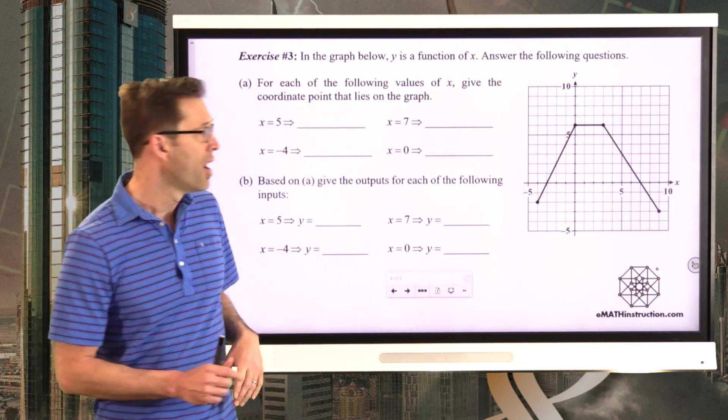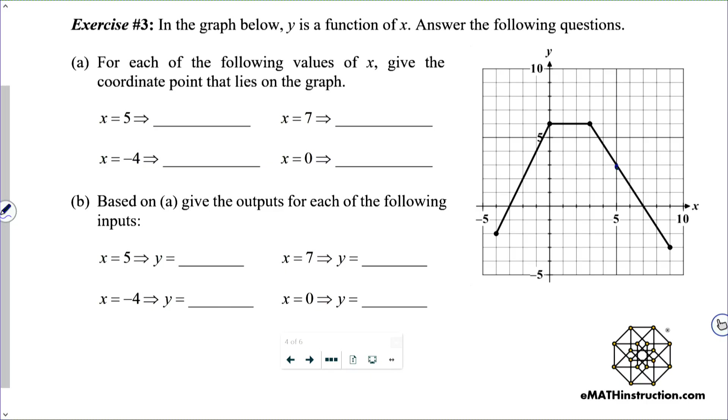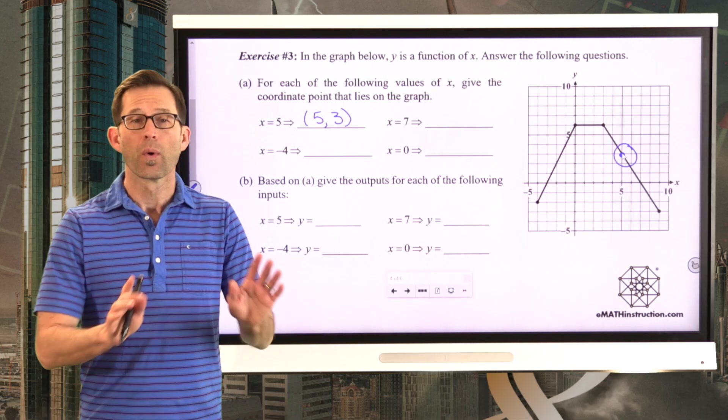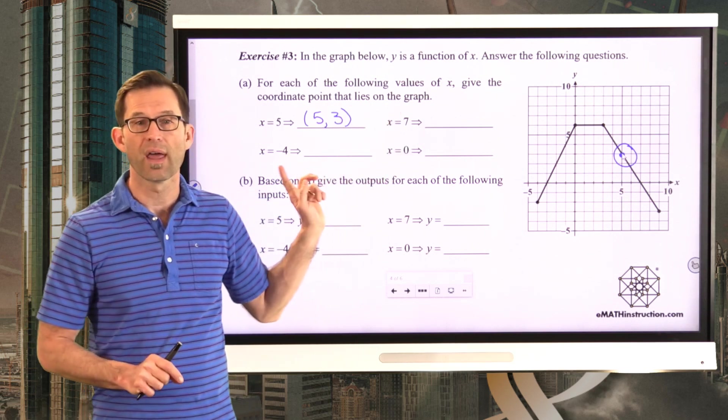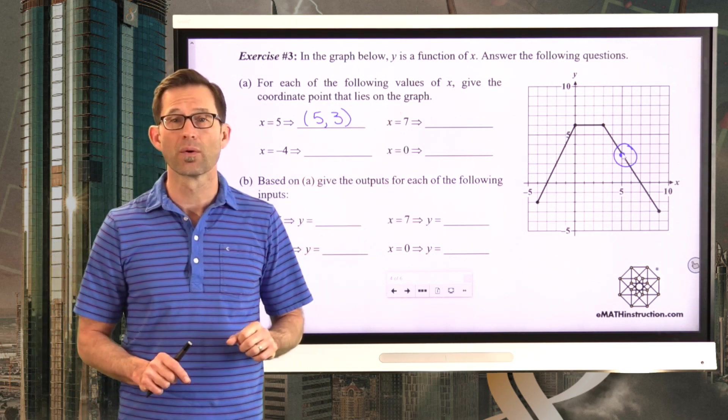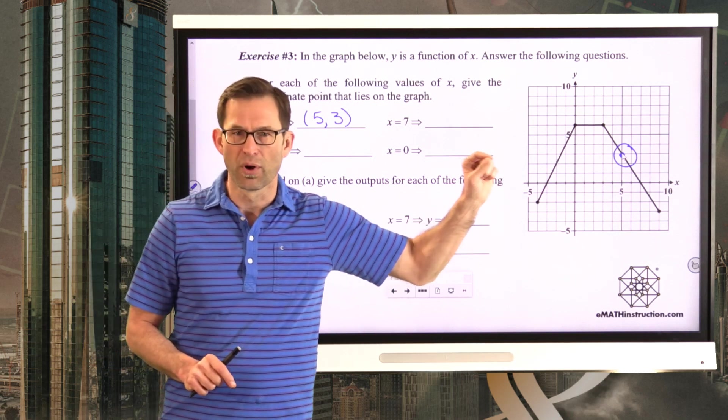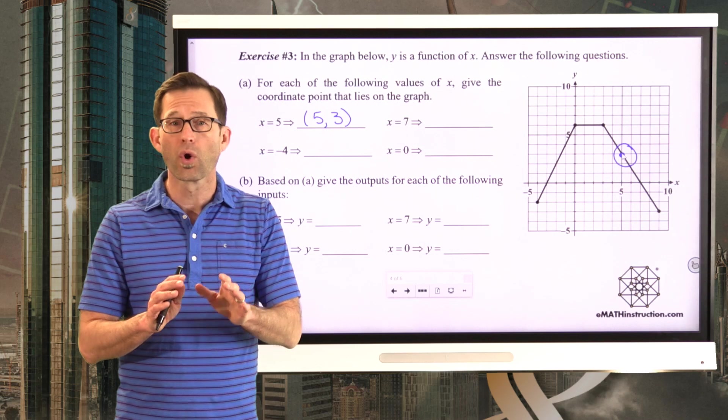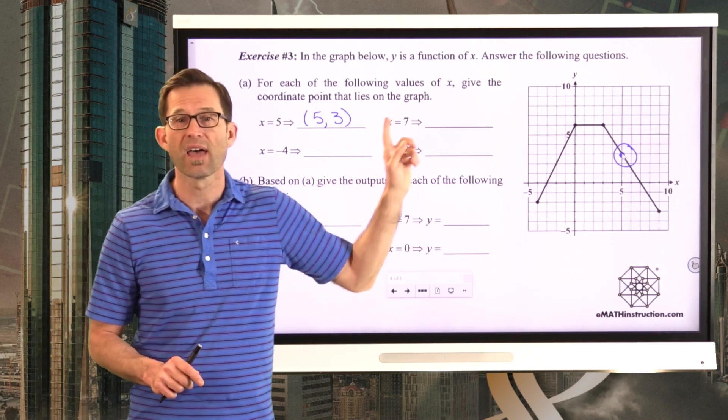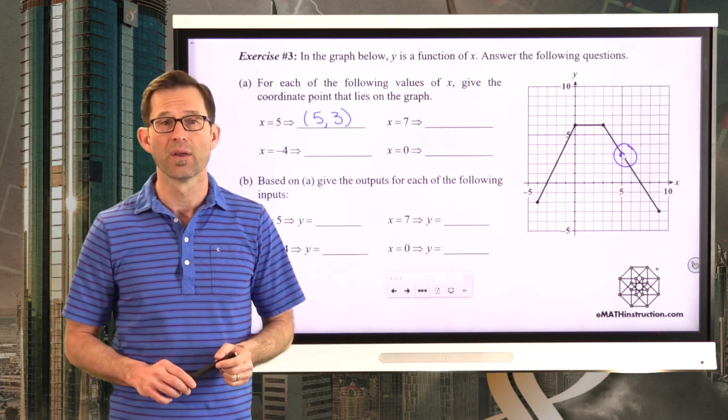So let's say we take this one. x equals 5. I'm going to go over to the graph where x is equal to 5, and I'm going to find the point on the graph. And that specifically corresponds to the point 5 comma 3. Simple enough. What I'd like you to do really quickly is pause the video and go through for x equals 7, x equals negative 4, and x equals 0. You don't need to necessarily put a dot there and circle it, although you can. Just figure out what coordinate point corresponds to these x values on the graph. Go ahead and pause the video now.